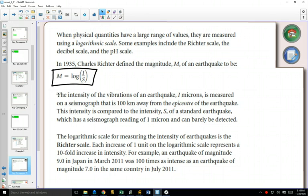So here, a 9 in Japan would be 100 times more than a 7 that happened in the same country. Once you get up to those big earthquakes in the 7s, 8s, and 9s, they make a huge difference.